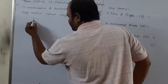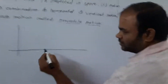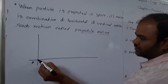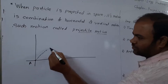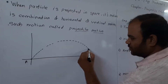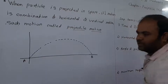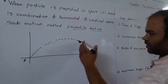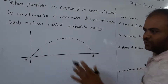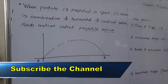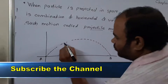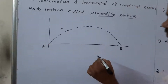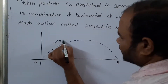We have to draw one diagram. Consider a particle projected from position A in space; it will strike at point B. The path traced by that particle is nothing but projectile motion. To understand why, we consider any one point on that path — let us call it point P, with coordinates X and Y.